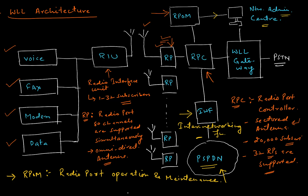The inter-networking function provides a gateway to internet services. One more unit is the WLL Gateway, which provides a switching function and connects the radio part of the architecture to the PSTN architecture — that is your landline network. The Radio Interface Unit directly receives signals from the radio port through radio signals.